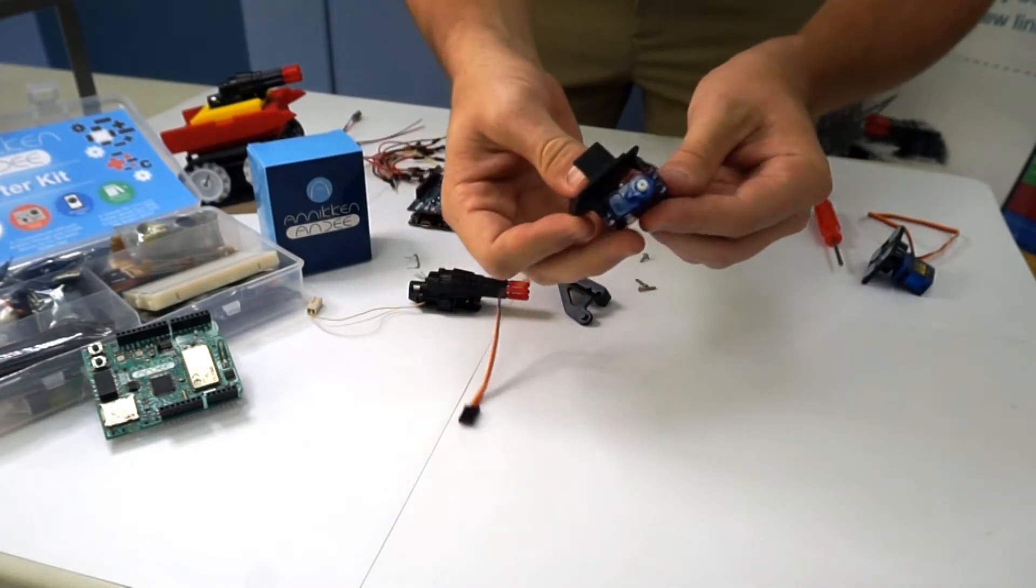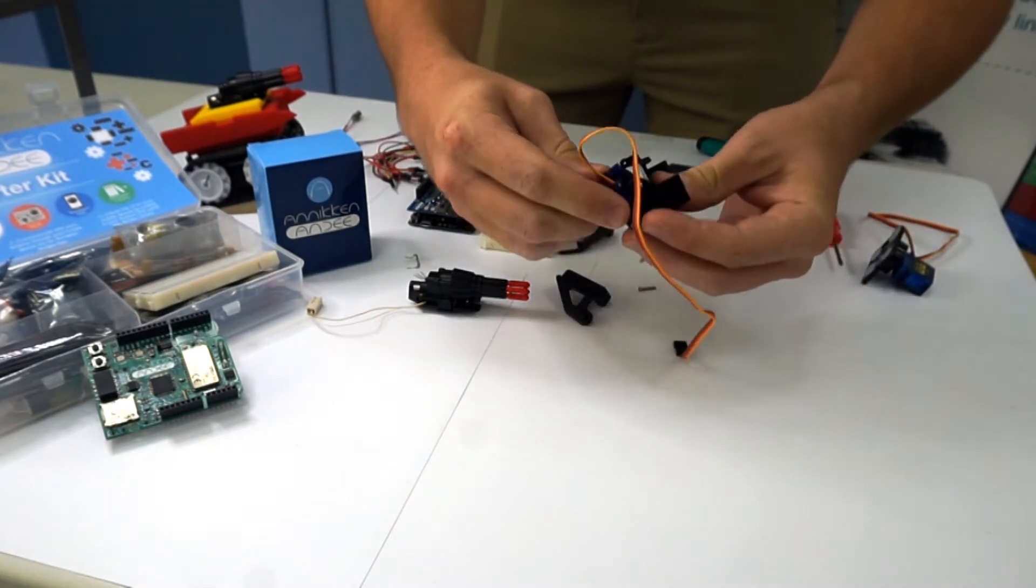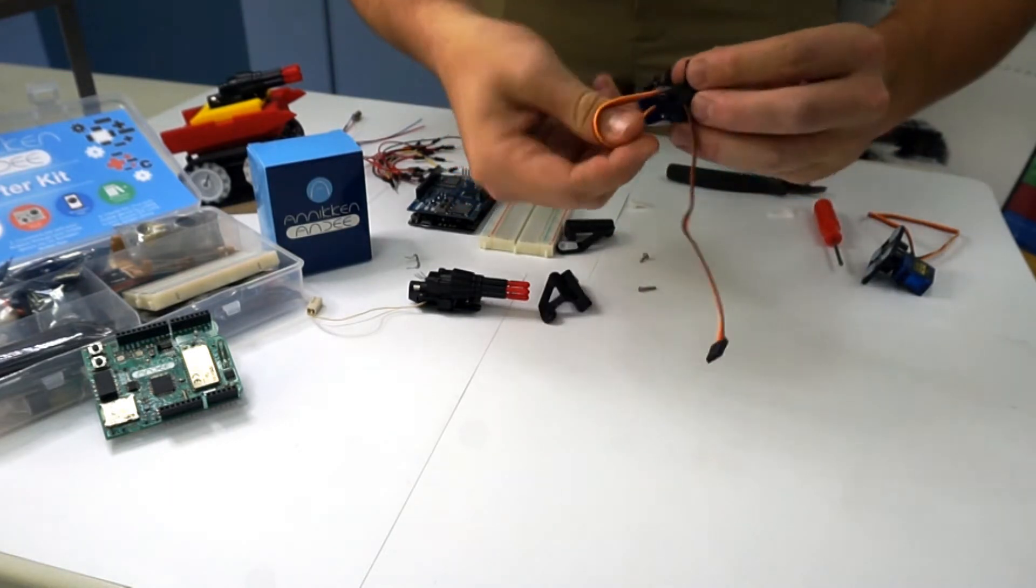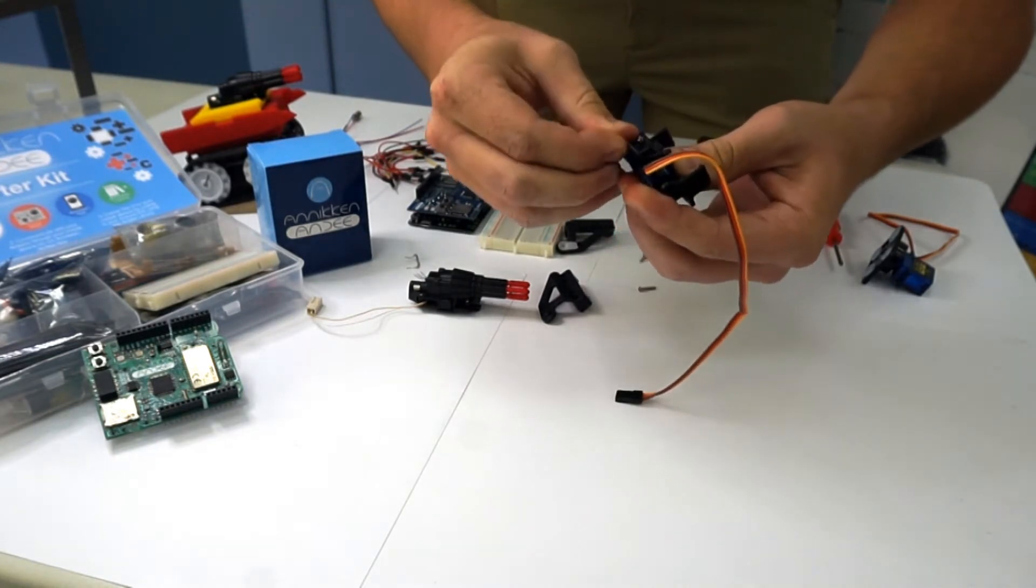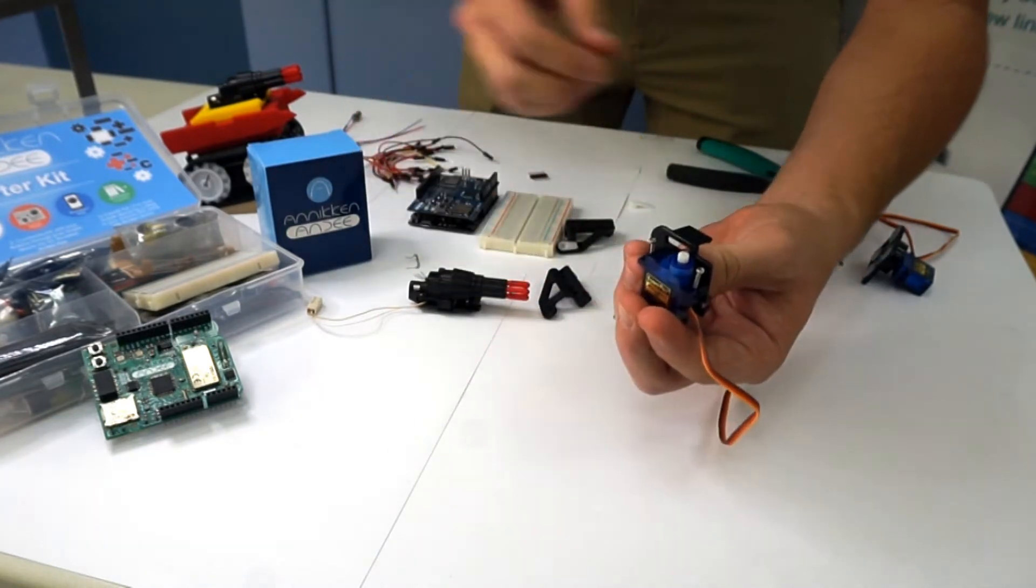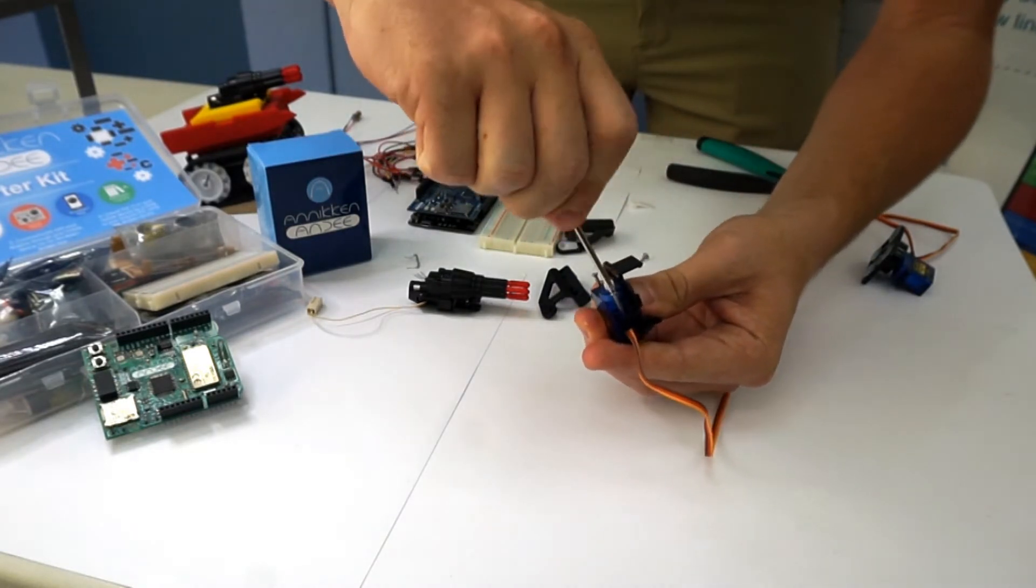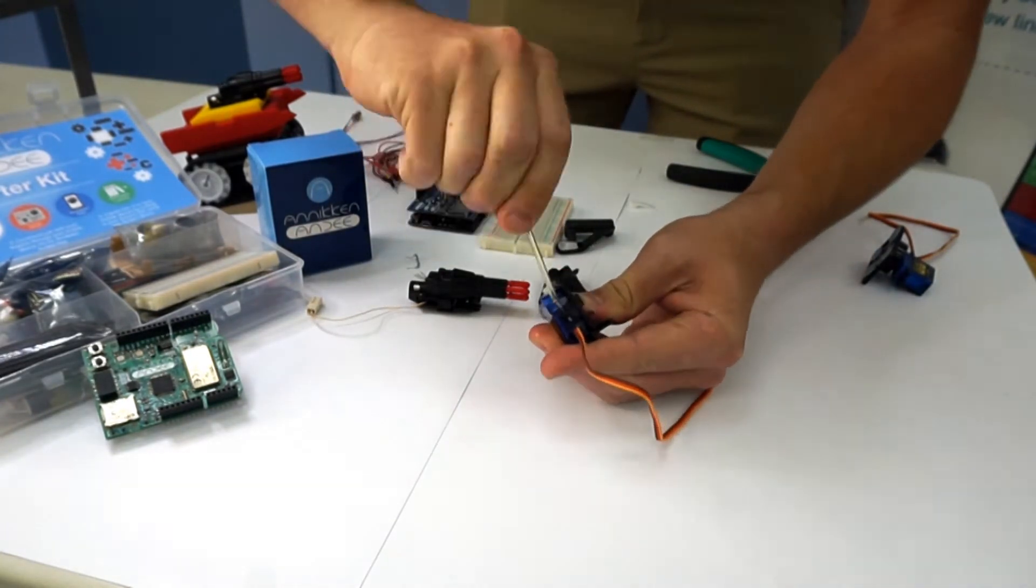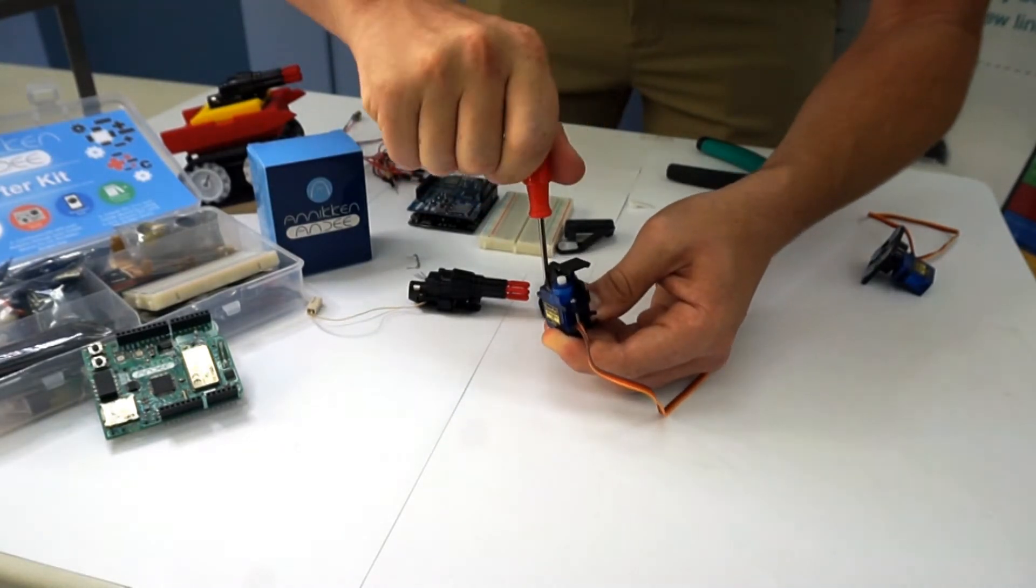So what you do is you take a screw, one of the longer ones actually, and simply place it in here. And then you can place the other one in here. So it should look like this. Next you just screw it in. Be patient because this does take a while. Now that's complete.